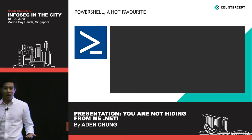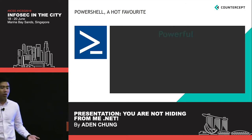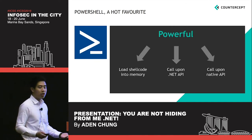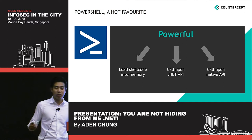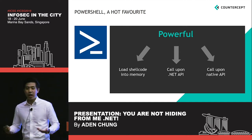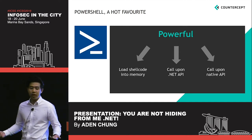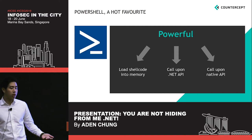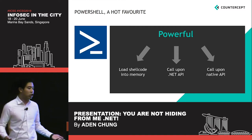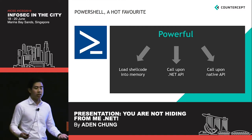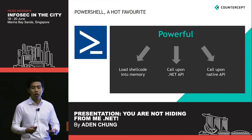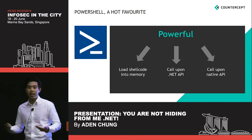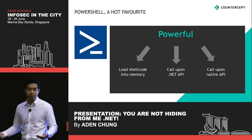Out of all these script-based attacks, PowerShell is a hot favorite — probably because it's a really powerful administrative tool. With it, a threat actor can actually abuse it to load shellcode in memory, call upon the .NET API, which is essentially what PowerShell is based on, and go as far as calling upon the native API as well.